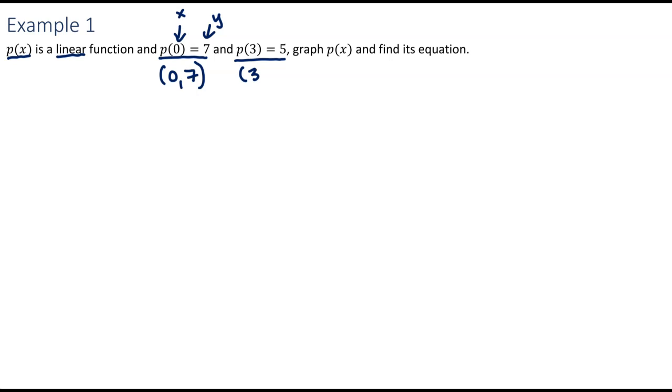The second point says p of 3 equals 5. So if I input 3 for my x, I will output 5 for my y. So just getting those in the correct order is really, I think, the only little bit of trickiness once you remember that this is what you're being told.